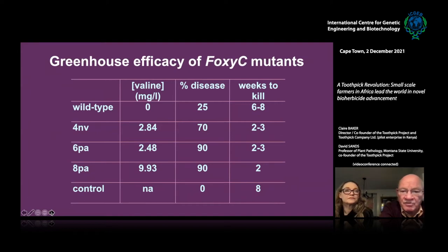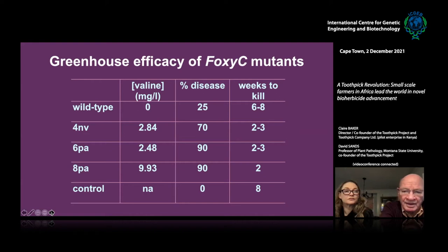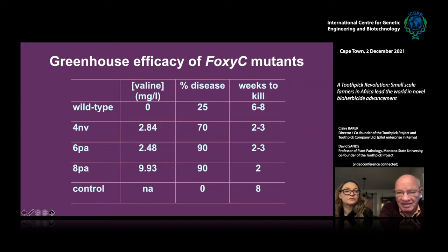A normal wild-type fungus isolated from the field takes six to eight weeks to kill and only kills about 25 percent. But when we get these excreting mutants that make a lot of valine, we get 90 percent kill in two weeks — which is about what you get with glyphosate.